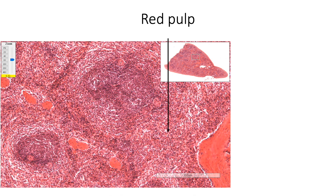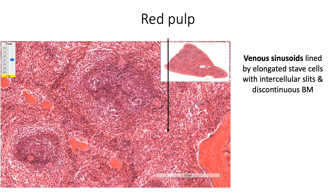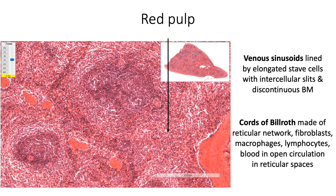Red pulp constitutes about 90% of splenic parenchyma. It clears the particulate matter of the blood as well as the old blood cells from the blood. It is made up of venous sinusoids lined by elongated stave cells, which have large intercellular slits and are surrounded by a discontinuous basement membrane. These intercellular slits and the discontinuous basement membrane allow for the return of blood cells from the open circulation. In addition, the red pulp also contains splenic cords or cords of Billroth, made of reticular network, reticular fibroblasts, macrophages, lymphocytes, and dendritic cells, as well as blood in the open circulation in the reticular spaces. This close association of blood with the macrophages and dendritic cells allows for vascular filtration as well as destruction of old blood cells.